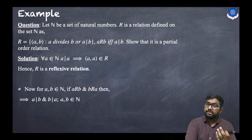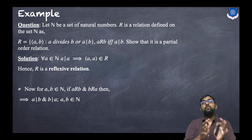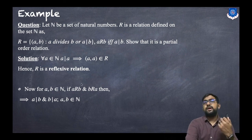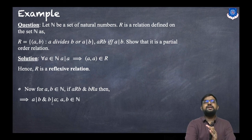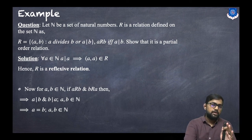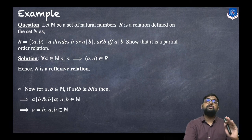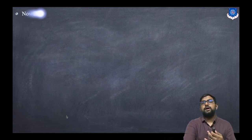For anti-symmetricity: let a and b both belong to N. If a is related to b and b is related to a, then a divides b and b divides a by the definition. Since both are natural numbers, if a divides b and b divides a then both must be the same. Hence R is an anti-symmetric relation.